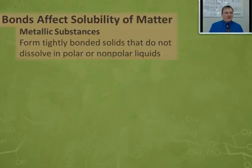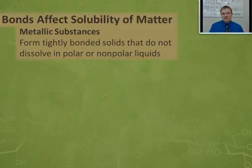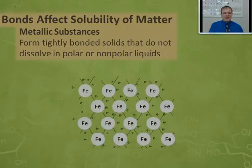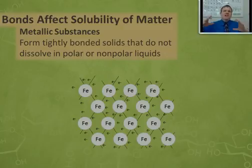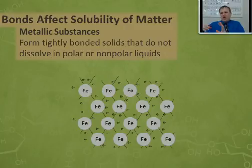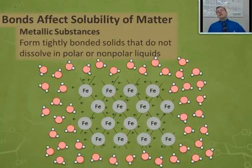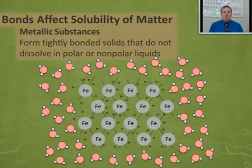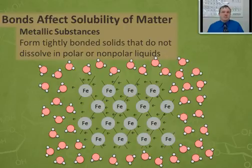The first kind of substance we're going to look at is the easiest one to understand: a metallic substance. Metallic substances form tightly bonded solids, usually with really high melting and boiling points. But they are so tightly bonded with that sea of electrons holding everything together that they do not dissolve in water or even in other solvents, because those solvents can't make their way in between the atoms of the metal.